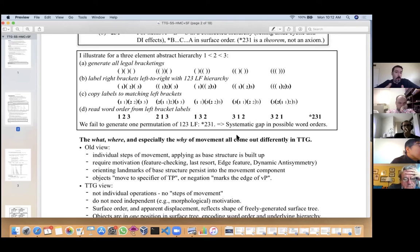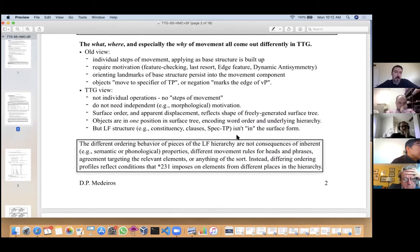That's the theory of neutral word order movement here, and it's really different than the standard theory. The standard classical view is that there are individual steps of movement—actual operations that apply as you build up the base structure, so internal merge interleaving with external merge. Being operations, they require individual motivation, whether in terms of feature-checking, last resort, edge features, dynamic antisymmetry, the labeling algorithm, what have you. There's also the idea that the orienting landmarks of the base structure persist into the movement component, such that we can talk about objects moving to the specifier of TP or negation marking the edge of VP.